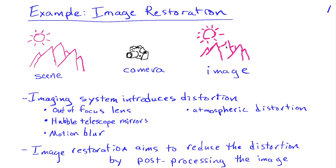An example of an image processing problem is that of image restoration. In this case, the image that we've recorded or measured has been distorted somehow.